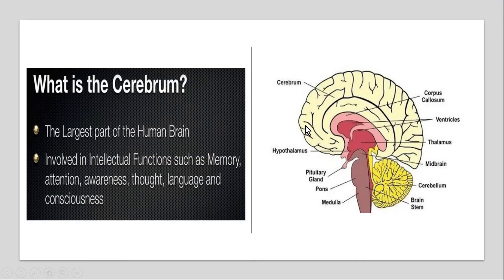Cerebrum is the largest part of the human brain as shown in the figure. It is involved in intellectual functions such as memory, attention, awareness, thought, language, and consciousness. And because of these intellectual functions, we are standing quite ahead of all the animals of the world, and we are called human beings. Now let us move to your next question.